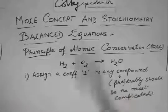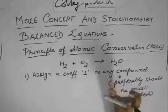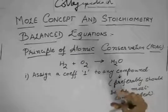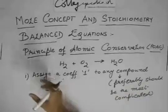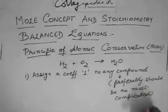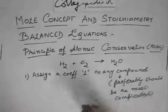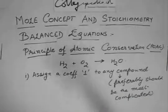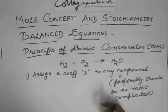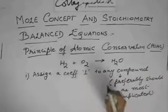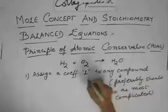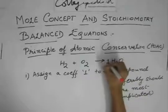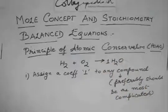Because if you just assign one to the most complicated compound, then that coefficient we have got. Now, related coefficients we have to find. So if you get the coefficient for the most complicated compound, then our job is much easier. So in this reaction, rather than assigning this coefficient 1 to H2 or O2, let us assign it to H2O.